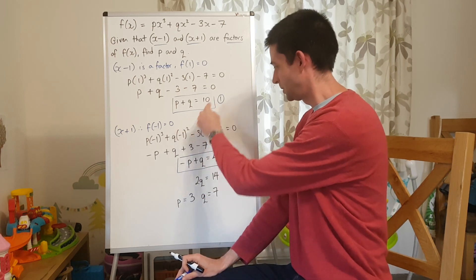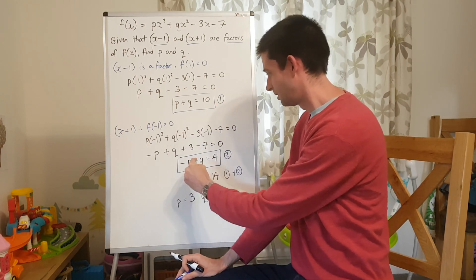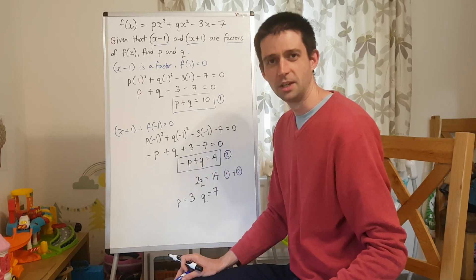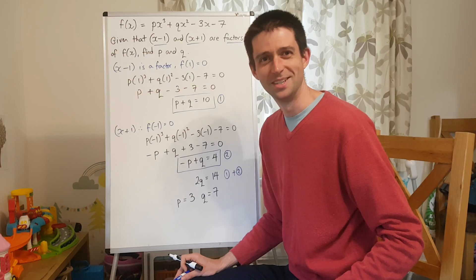So, p + q is 10, 3 + 7 is 10, -3 + 7 is 4. Job done. Maths. Thank you very much for the not-quite-empty classroom that I'm teaching with this evening.